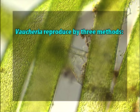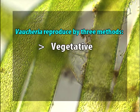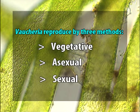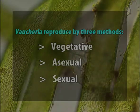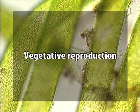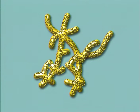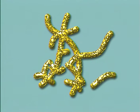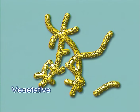Vaucheria reproduces by three methods: vegetative, asexual, and sexual. Vegetative reproduction takes place through fragmentation. In this method, the thallus breaks up externally into short segments which ultimately form new individuals.